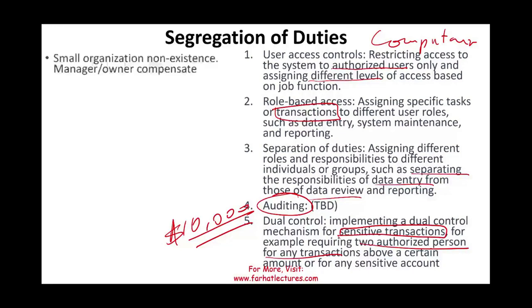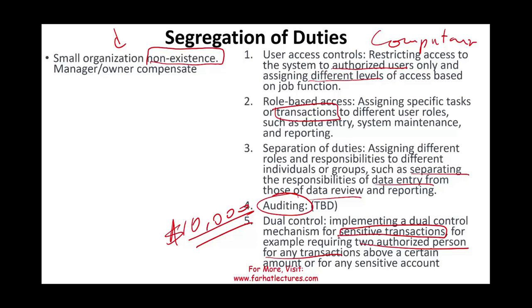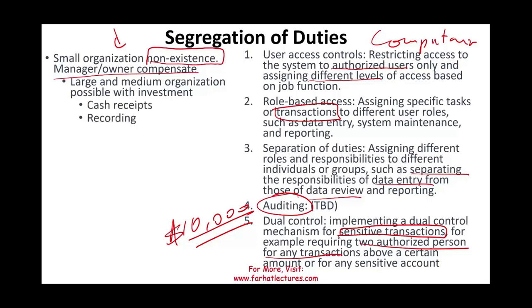In a manual system, segregation of duties may be non-existent in small companies because you need many people to separate processes manually. In small organizations, the manager or owner is usually involved in every transaction to compensate. In larger organizations it's possible with investment — for example, the person who receives cash should not also record, deposit, or reconcile that cash.